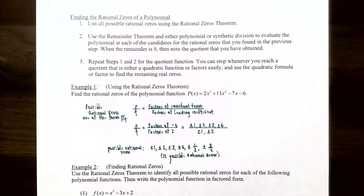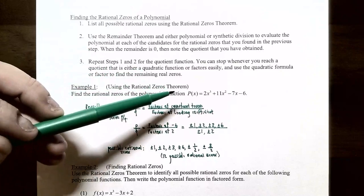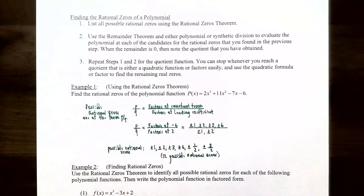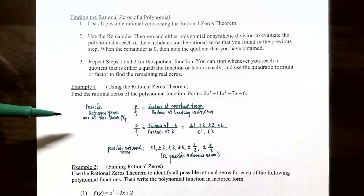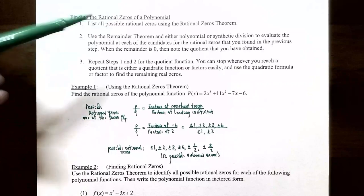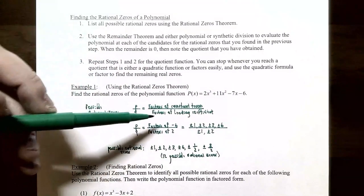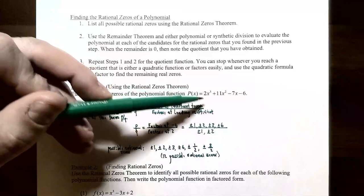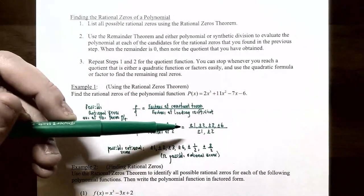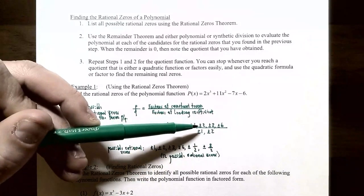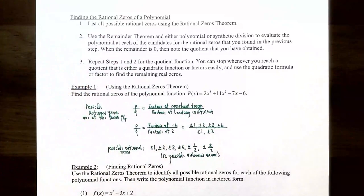Example one: find the rational zeros of P(x) = 2x³ + 11x² − 7x − 6. The coefficients 2, 11, −7, and −6 are all integers, so we can use the rational zeros theorem. The possible rational zeros are p/q, where p is a factor of the constant term −6, giving ±1, ±2, ±3, ±6, and q is a factor of the leading coefficient 2, giving ±1, ±2.